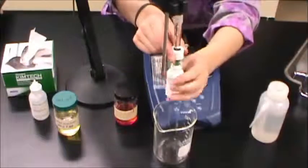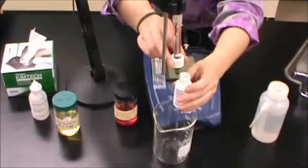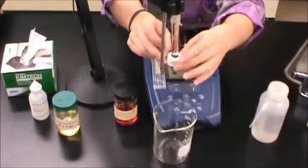Remove the bottle of electrode storage solution from the end of the pH probe and rinse both probes well with deionized water, then blot them dry with a Kim wipe.